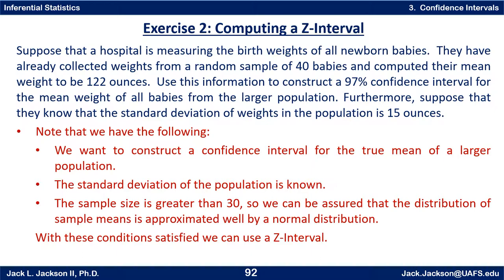Let's consider what it is we're doing. We want to construct a confidence interval for the true mean of a larger population from the sample. The standard deviation of the population is known. We have a single sample we're working from to infer the mean from a larger population, and the sample size is greater than 30. That means we can be assured that the distribution of sample means is approximated well by a normal distribution, even if the individual weights are not necessarily normally distributed. Probably the weights are close to normal anyway, but certainly with a sample size of 40, which is much bigger than 30, we don't have to worry about that.